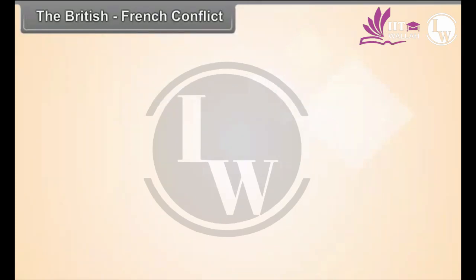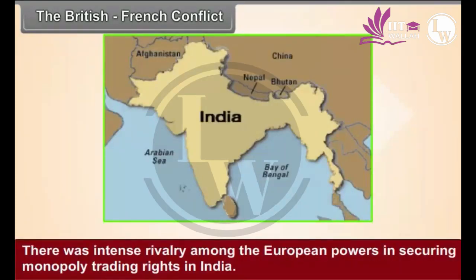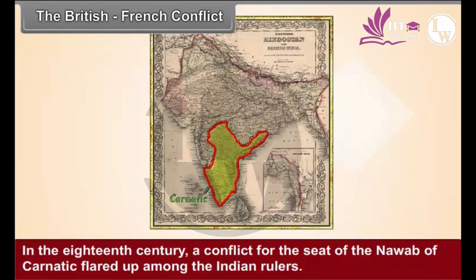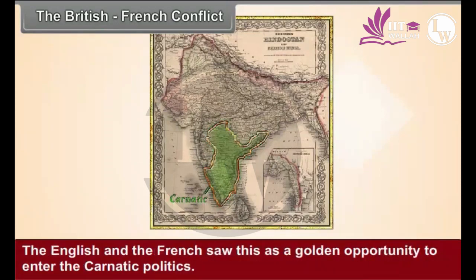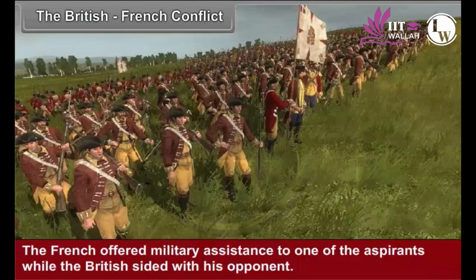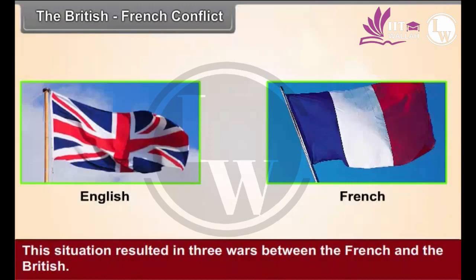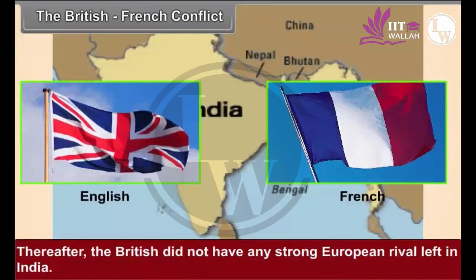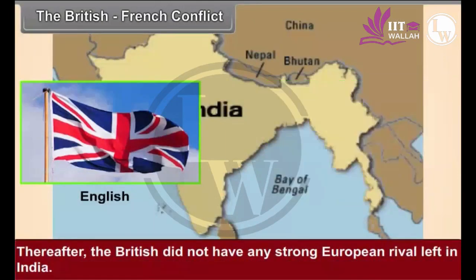British-French Conflict. There was intense rivalry among the European powers in securing monopoly trading rights in India. In the 18th century, a conflict for the seat of the Nawab of Karnatak flared up among the Indian rulers. The English and the French saw this as a golden opportunity to enter Karnatak politics. The French offered military assistance to one of the aspirants, while the British sided with his opponent. This situation resulted in three wars known as the Karnatak Wars. The British defeated the French in the Third War, and thereafter had no strong European rival left in India.